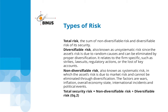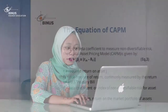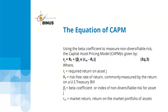Total security risk equals non-diversifiable risk plus diversifiable risk. The CAPM equation uses the beta coefficient to measure non-diversifiable risk: R_G = R_F + β_G × (R_M − R_F), where R_G is the required return on asset G, R_F is the risk-free rate of return (commonly measured by the US Treasury Bill return), β_G is the beta coefficient (index of non-diversifiable risk for asset G), and R_M is the market return.